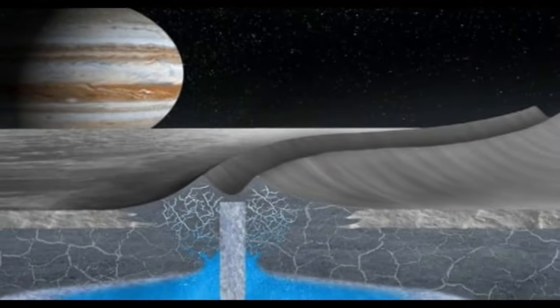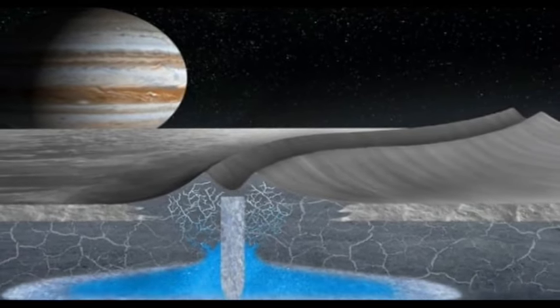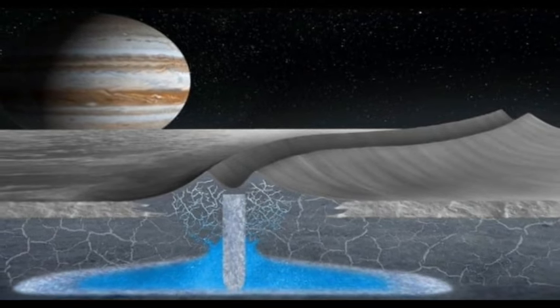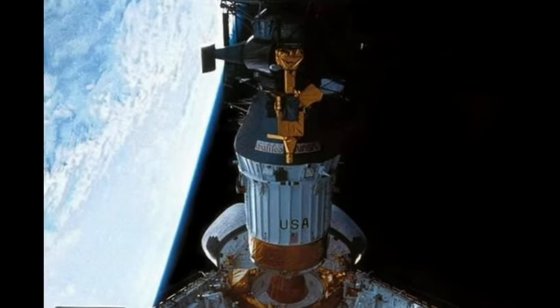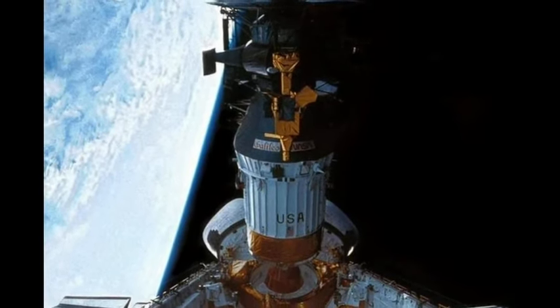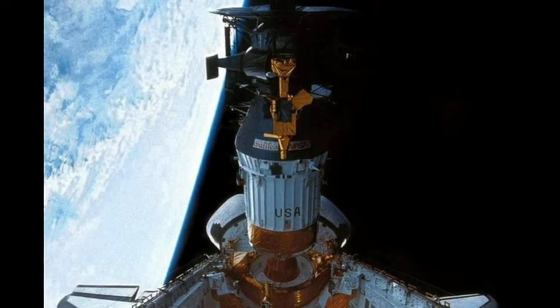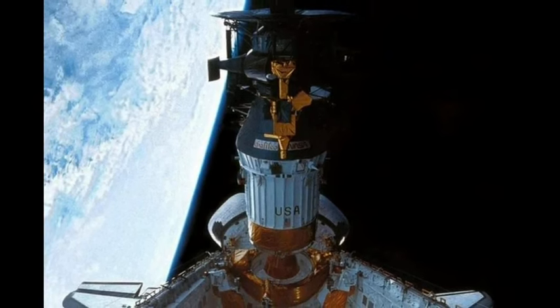Galileo confirmed that Europa was geologically active. Its close-up images revealed enormous cracks in the moon's surface with dark, icy material flowing into the open gaps. Similar to previous spacecraft, Galileo found only a handful of impact craters, suggesting a relatively young surface that has been smoothed over time, possibly by volcanic activity.